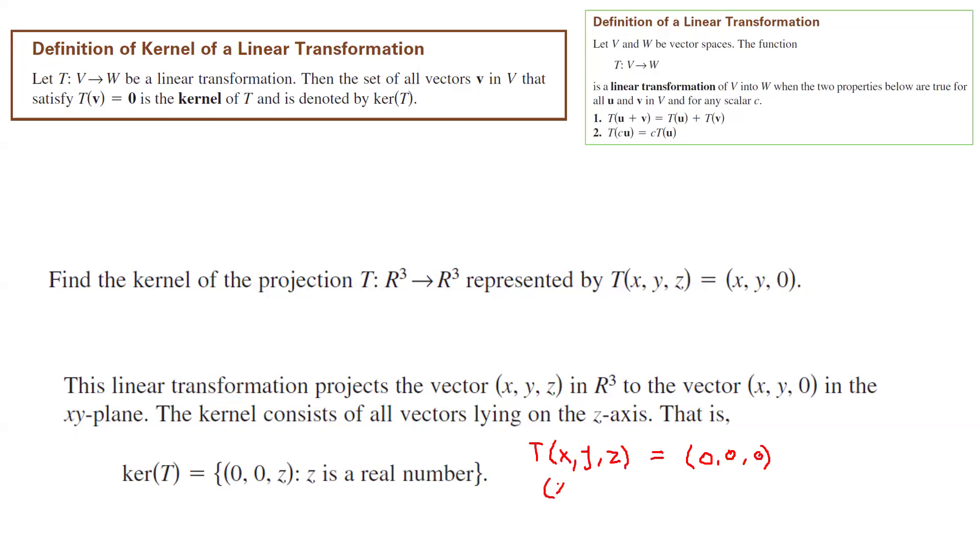So this function takes a vector and it gives us (x, y, 0). So if I set this equal to (0, 0, 0), x and y must be equal to 0, but z is already 0. It doesn't matter whatever that z is. It maps to 0 as well.